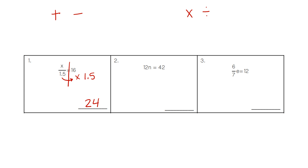For number 2, the 12 and the n together means multiply. So we do the opposite because the 12 is on the left and the 42 is on the right — the numbers are on opposite sides, so we do the opposite operation. Instead of multiplying, we divide the number.